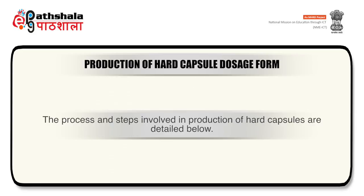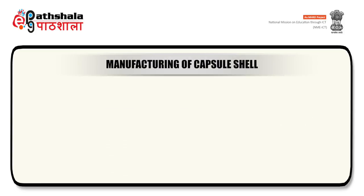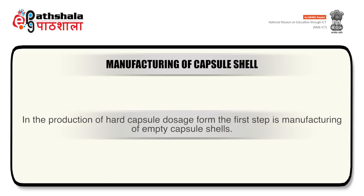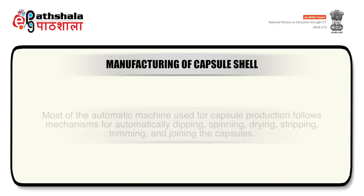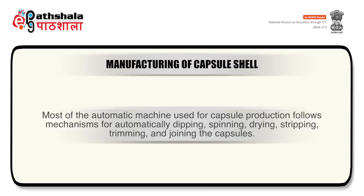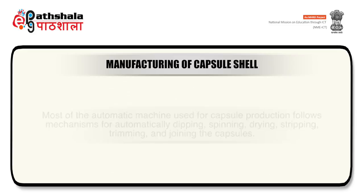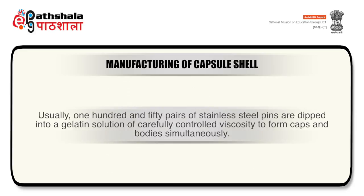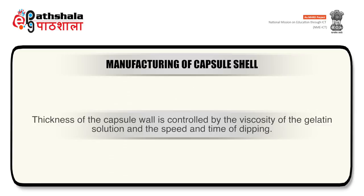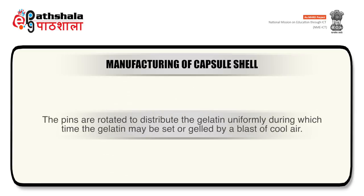The first step in hard capsule production is manufacturing of the capsule shell. Most automatic machines follow mechanisms for dipping, spinning, drying, stripping, trimming, and joining the capsules. Usually 150 pairs of stainless steel pins are dipped into a gelatin solution of carefully controlled viscosity to form caps and bodies simultaneously. The thickness of the capsule wall is controlled by the viscosity of the gelatin solution, speed, and time of dipping. The pins are rotated to distribute gelatin uniformly, during which the gelatin may be set by a blast of cool air — this step is known as spinning.